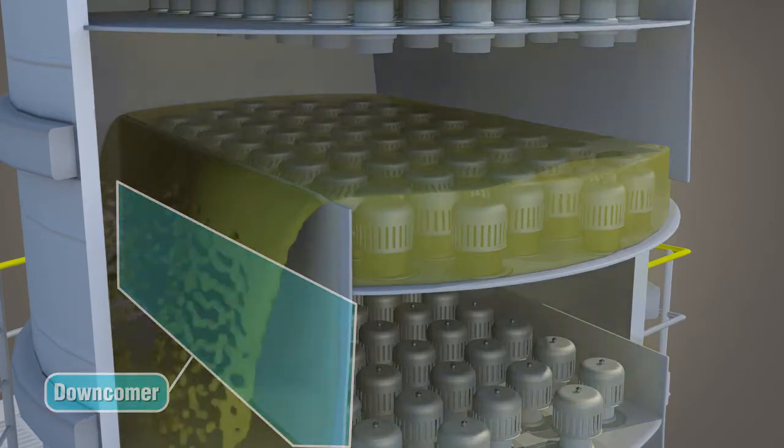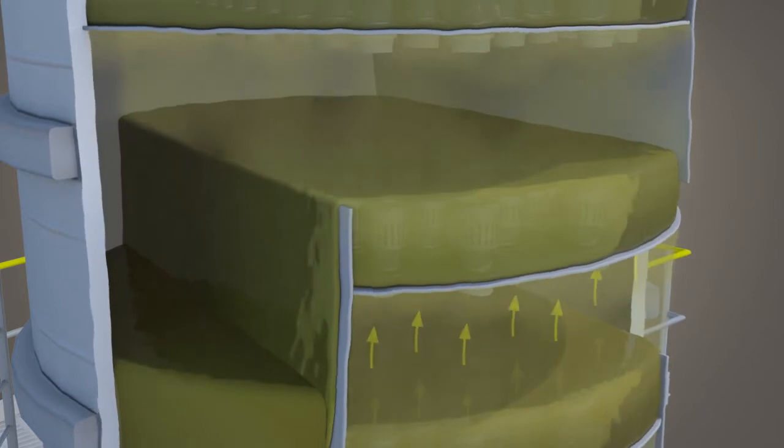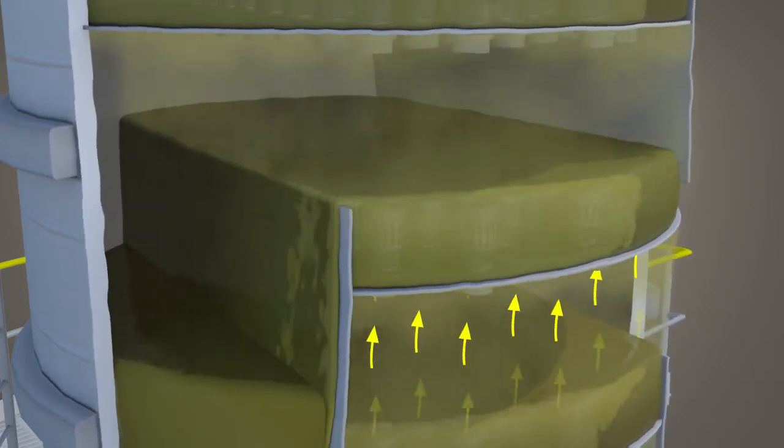The weir effectively ensures a constant liquid level on the tray. As vapor rises from below, it collects under the tray.